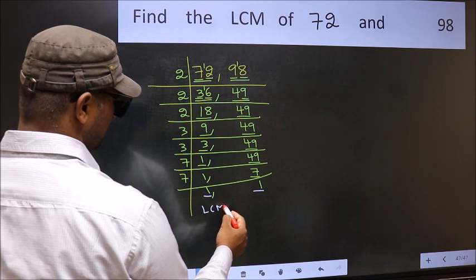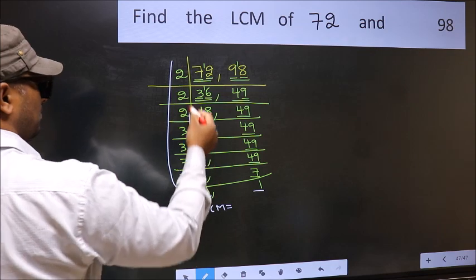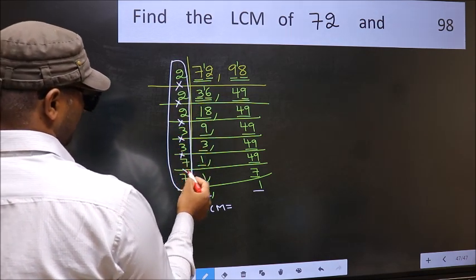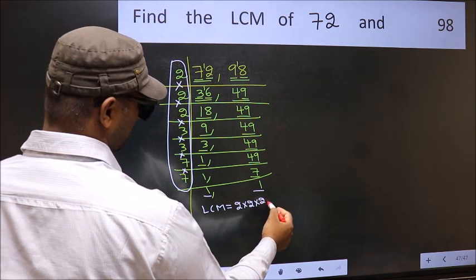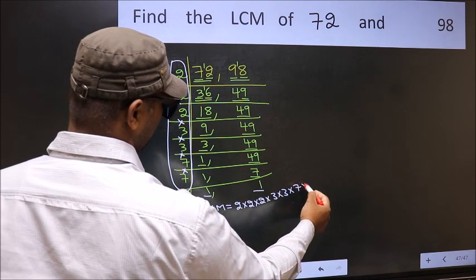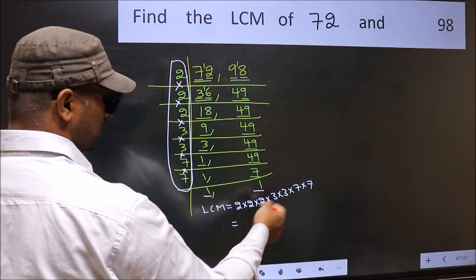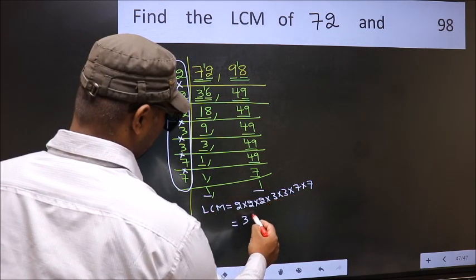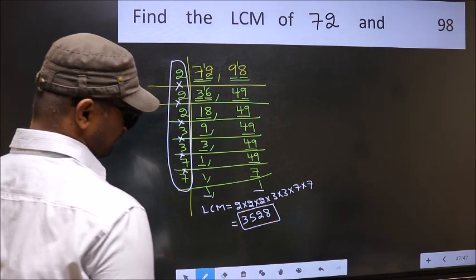So our LCM is the product of these numbers: 2 × 2 × 2 × 2 × 3 × 3 × 3 × 7 × 7. When we multiply these numbers, we get 3528. That is our LCM. Thank you.